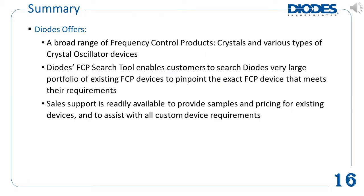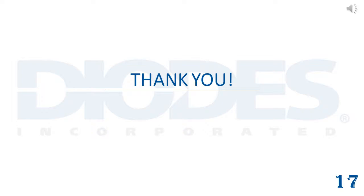To wrap things up, Diodes offers a broad range of frequency control products — crystals and various types of crystal oscillator devices. Diodes' FCP search tool enables customers to search Diodes' very large portfolio of existing FCP devices and to pinpoint the exact device that meets their requirements. Sales support is readily available to provide samples and pricing for existing devices and to assist with all custom device requirements. Thank you for viewing Diodes Incorporated's FCP search tool training module.